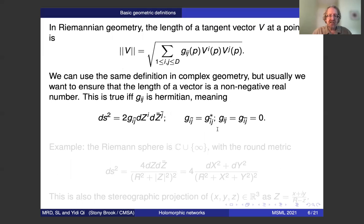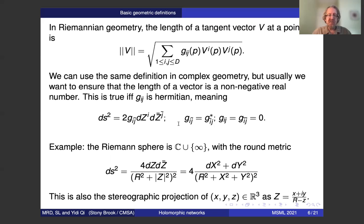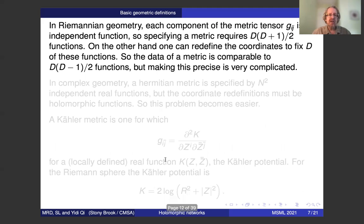Another aspect we want of our definition is that the length of a tangent vector should be a non-negative real number. However, this will be true if the metric is Hermitian, meaning that it has only these mixed Z Z-bar components and that the matrix restricted to those components is transposed equals its complex conjugate, so that's the Hermitian condition. Here's an example of the Riemann sphere, the complex plane with a point added at infinity and the round metric written in real coordinates and then in the corresponding complex coordinates.